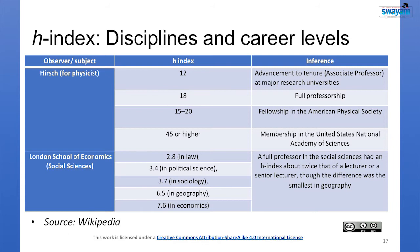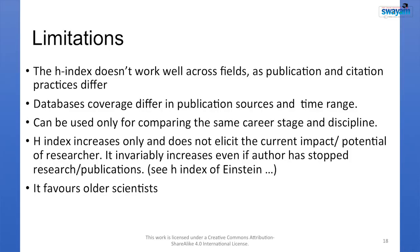The level of scientist is well indicated by H-index. However, the London School of Economics observed that average H-index values for faculty members differ significantly across disciplines. H-index is quite low in social sciences compared to sciences: 2.8 in law, 3.4 in political science, 3.7 in sociology, 6.5 in geography, and 7.6 in economics. A full professor in social sciences had an H-index about twice that of a lecturer or senior lecturer.